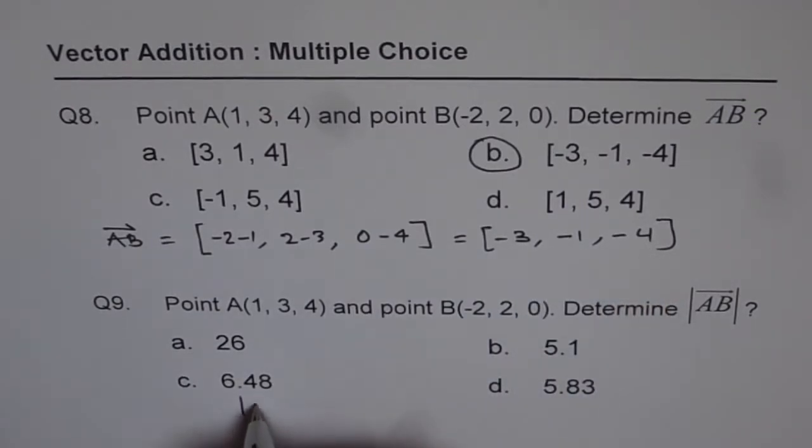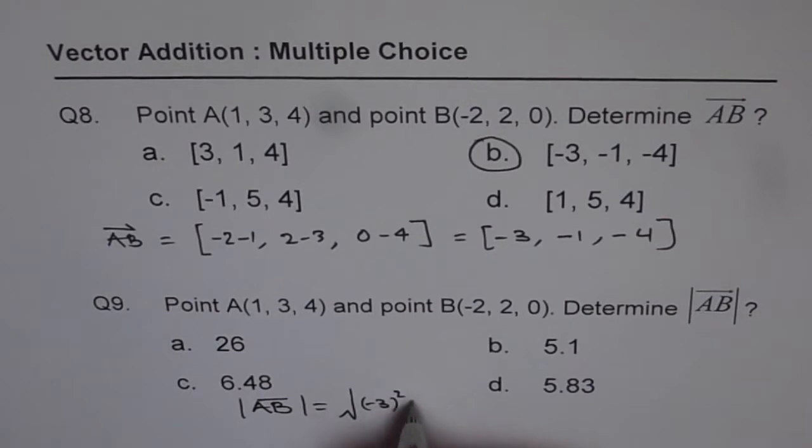So we can write down magnitude of vector AB equals square root of (-3)² plus (-1)² plus (-4)².